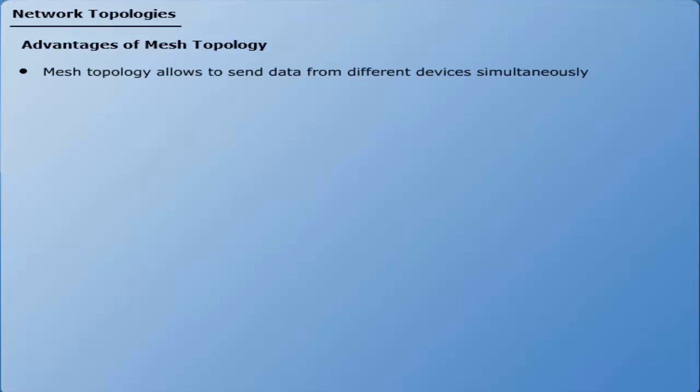Advantages of mesh topology. Number 1: Mesh topology allows to send data from different devices simultaneously. Number 2: If one of the nodes fails, it does not affect the network.